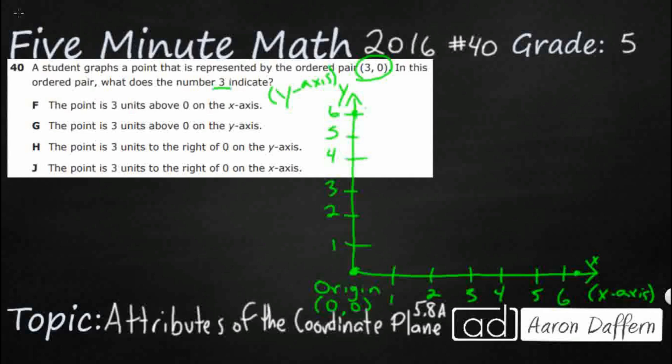We go horizontal first, vertical second. So, that's what helps us with this 3, 0. Think of it like alphabetical order. The first number represents the x-coordinate, and the second number represents the y-coordinate.